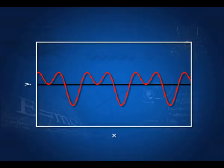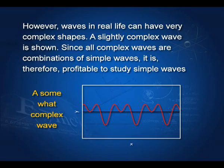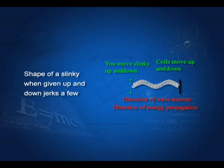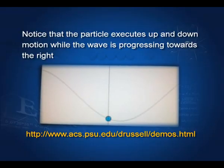In real life, waves can have very complex shapes which can be broken up into simple waves. Suppose you have a string or a slinky — a long spring — and you give it a jerk. You will see it assumes a wave shape and the wave travels along in that direction. The individual coils move up and down, but the wave travels along the string. You will see the particle moving up and down while the wave passes from left to right.